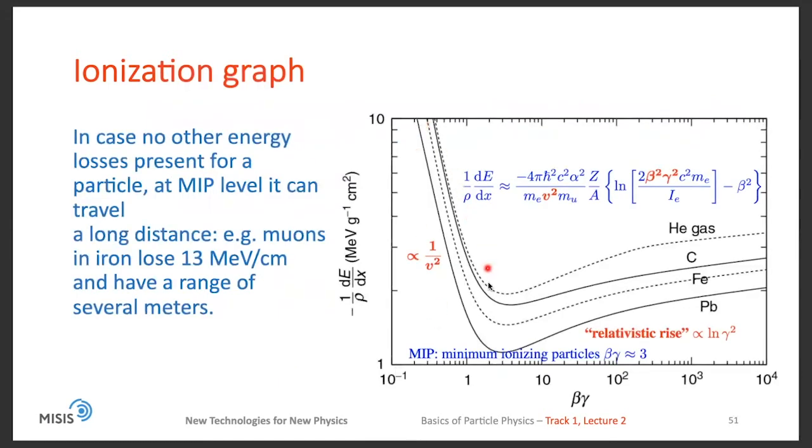The most important graph to remember is basically this one. It shows this quantity 1 over rho dE/dx as a function of beta-gamma of a particle. You can see there are basically three main structures in this graph. At the beginning, you have a very quick drop of the energy loss proportional to 1 over v squared. Then at the end, we have relativistic rise proportional to logarithm of gamma squared. And minimum, which is characteristic to minimum ionizing particle, occurring typically at beta-gamma equal approximately to 3. Energy loss is more or less constant for relativistic particles and becomes very important for very slow particles.